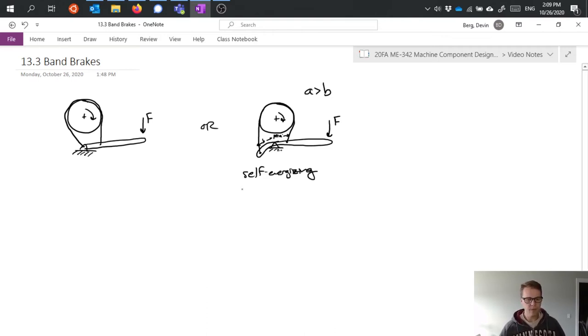So let's take a look at what it would look like then to analyze this. And I'm going to use the simpler version of the band brake for this analysis example. So kind of zooming in on the drum. I have my drum and it rotates, and I have my band wrapped around it.